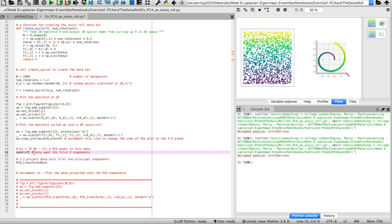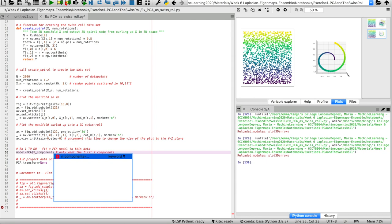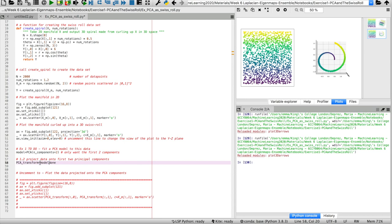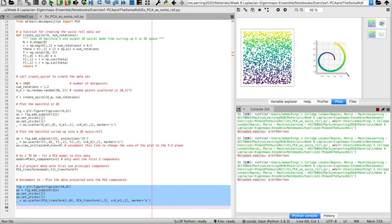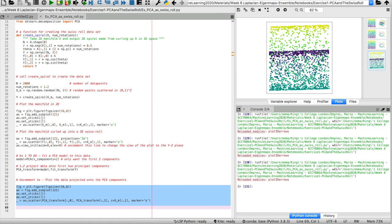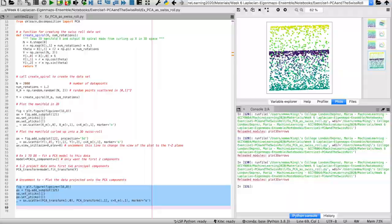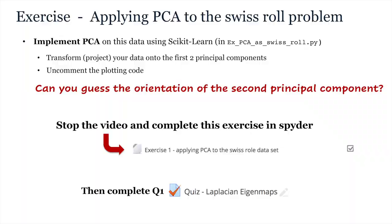So, if we implement PCA and then fit and transform the data, and uncomment the plotting code, we get the following result. What do you think is wrong with this projection? To answer this question, stop the video and complete the first question in the Keats quiz.